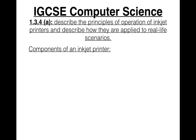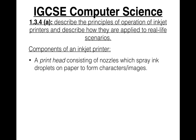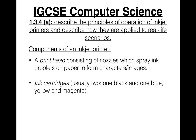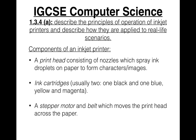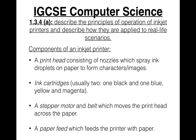The components of an inkjet printer include: a printhead consisting of nozzles which spray ink droplets on paper to form characters or images; ink cartridges — usually two, one black and one containing cyan, yellow and magenta, though they can also come as one cartridge with all four colors or sometimes cartridges with six colors; a stepper motor and belt which moves the printhead across the paper; and a paper feed which feeds the printer with paper.